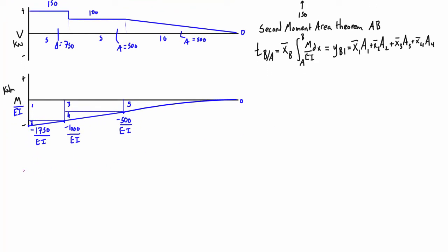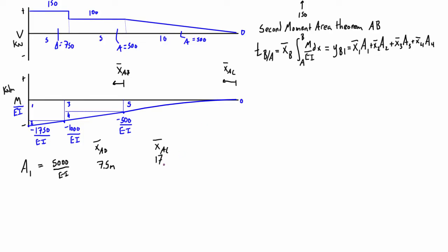For section one: A1 = 5 × (1000/EI) = 5000/EI. Its x-bar from point B for the AB interval is halfway across its 5-meter width plus the 5 meters beyond, so x̄_AB = 7.5 meters. When we later apply the theorem from A to C, we add another 10 meters, so x̄_AC = 17.5 meters. All remaining areas and x-bars for the five composite sections are computed similarly.